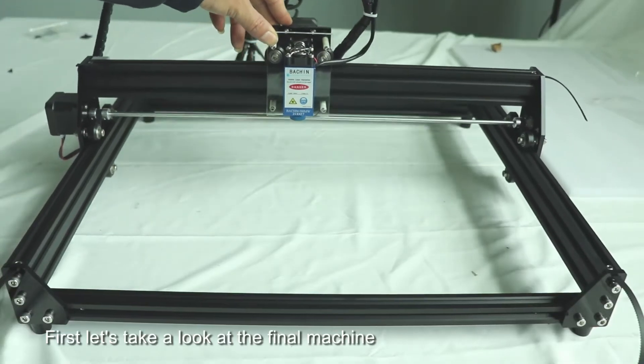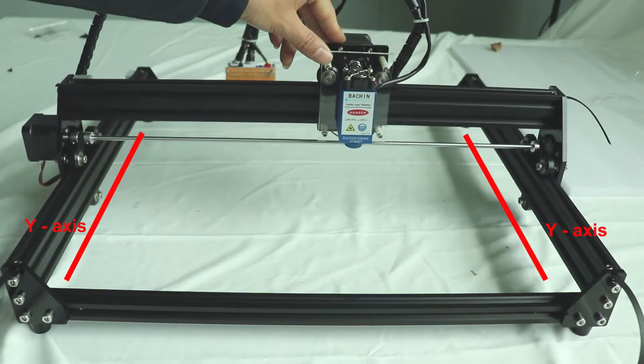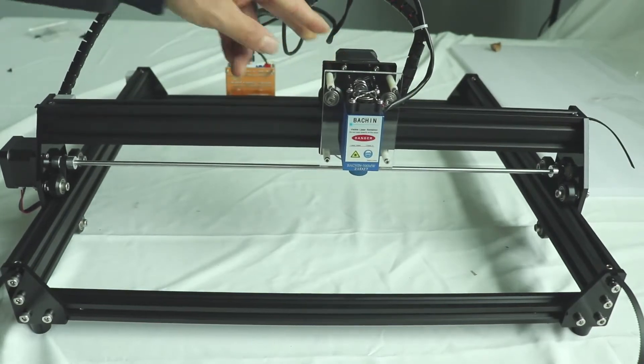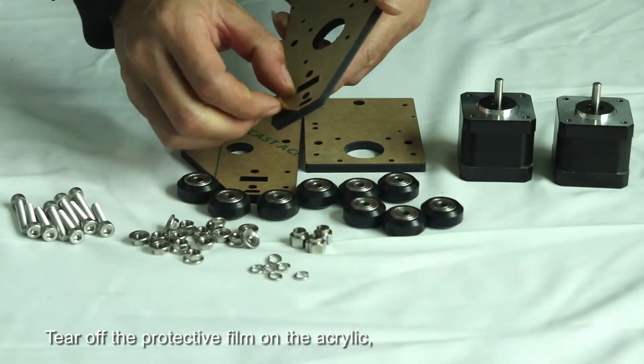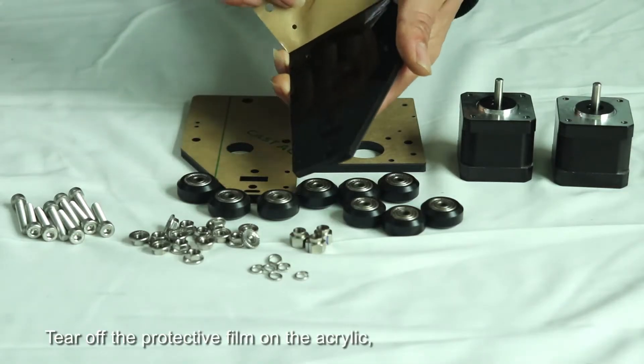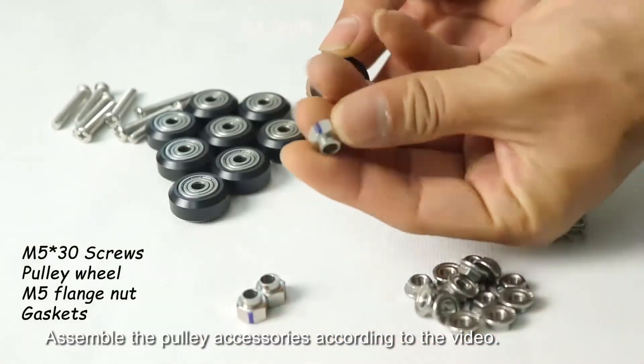First, let's take a look at the final machine, which will help you to assemble faster. Here we go. To start, remove the protective film on the acrylic. Assemble the pulley accessories according to the video.